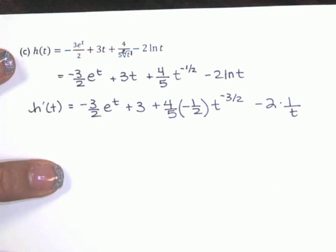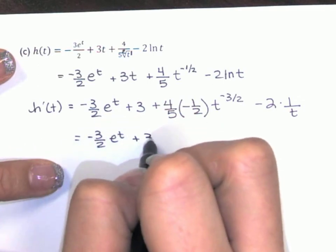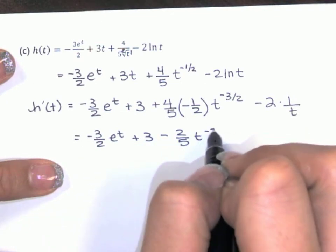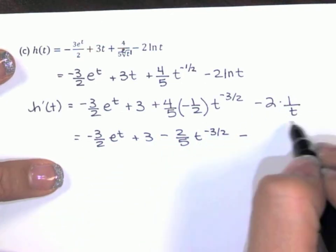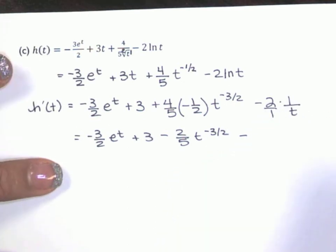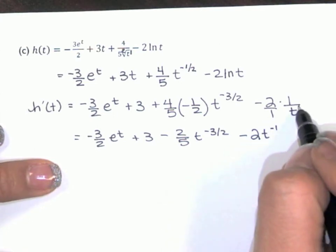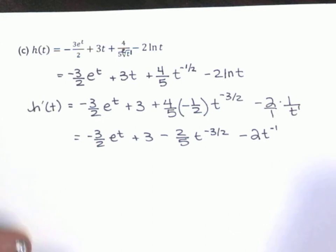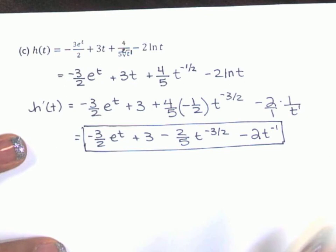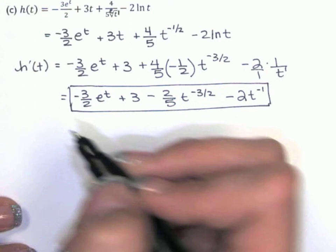Then I bring my negative 2 down, and the derivative of natural log of t is 1 over t. So this is my answer, just not simplified. Negative 1 half of 4 fifths is negative 2 fifths. If I were checking in the back of the book, they'd call the last term negative 2 over t. But since we're about to take the second derivative, it makes more sense to write it as negative 2 times t to the negative 1, bringing it up to the numerator so we can differentiate again.